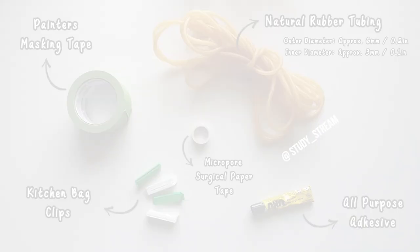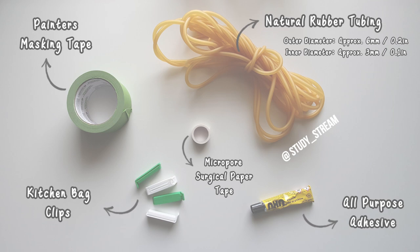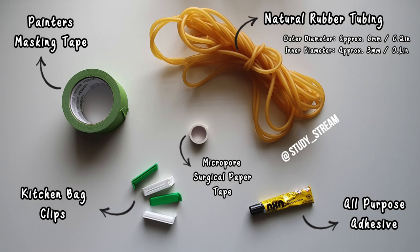Pool foam noodle, natural rubber tubing. I've tested many different tube materials and this is the best I have found so far. Painter's masking tape, small kitchen bag clips, these ones are from IKEA. Micropore surgical paper tape and all-purpose adhesive.